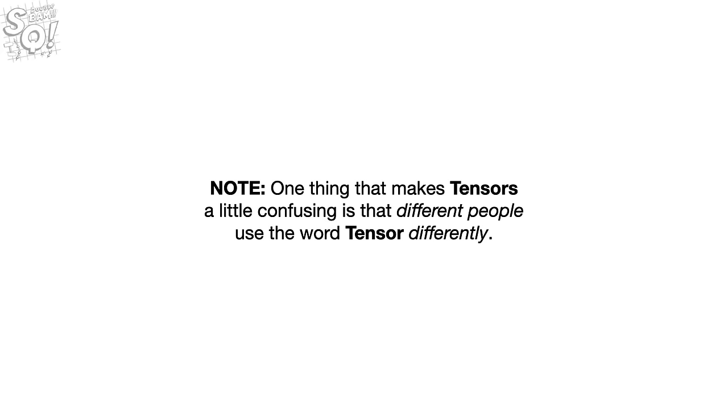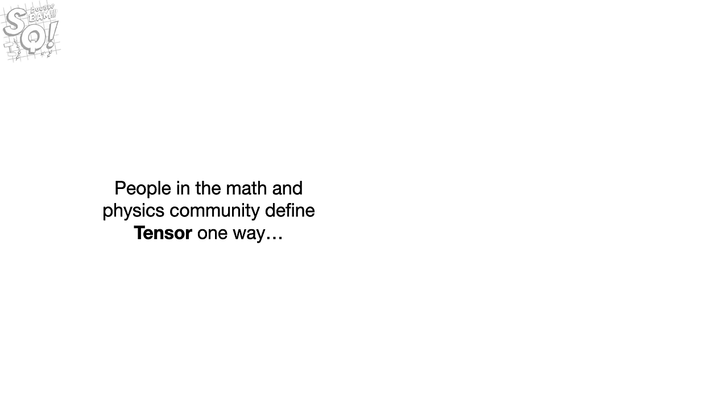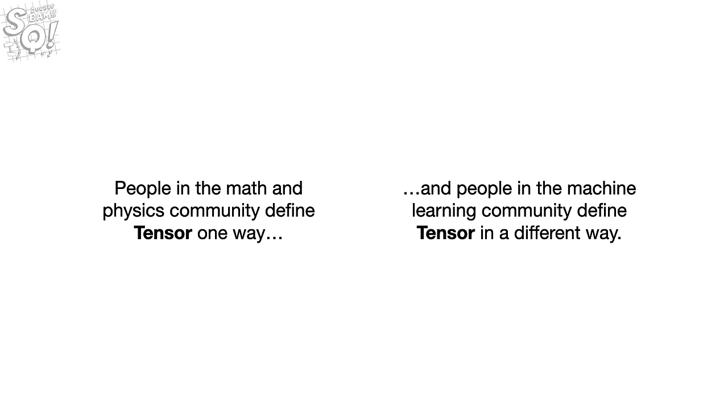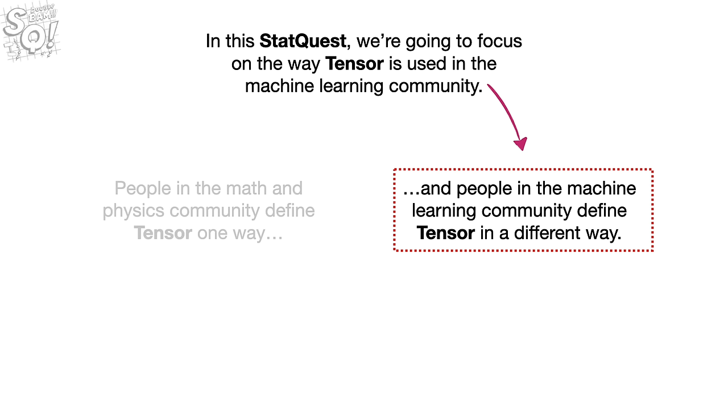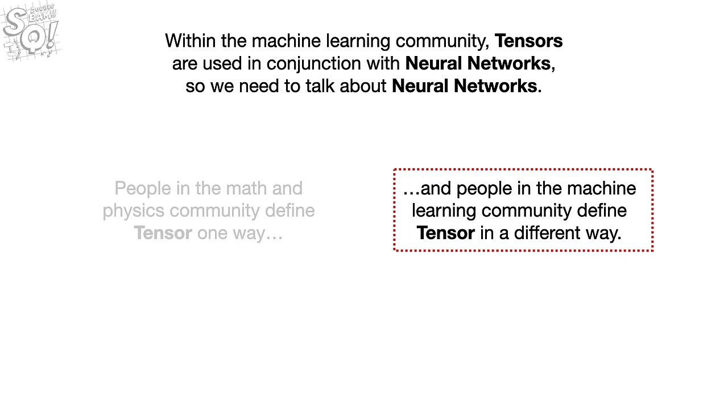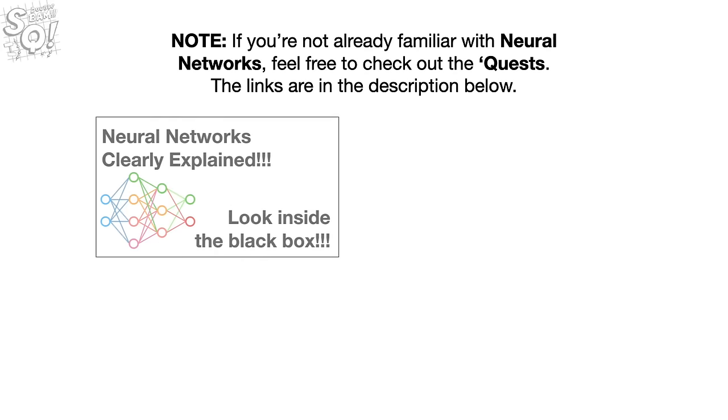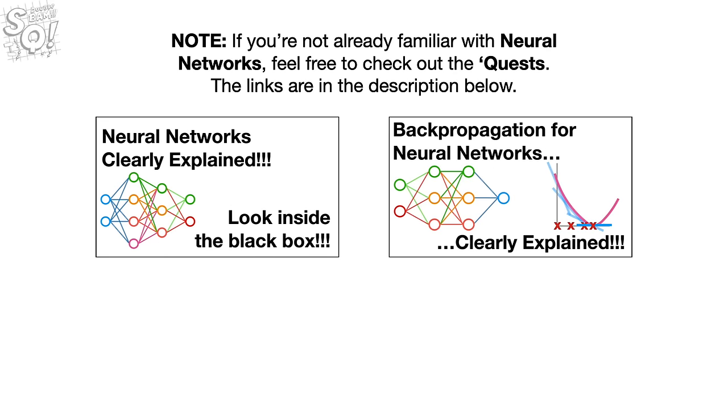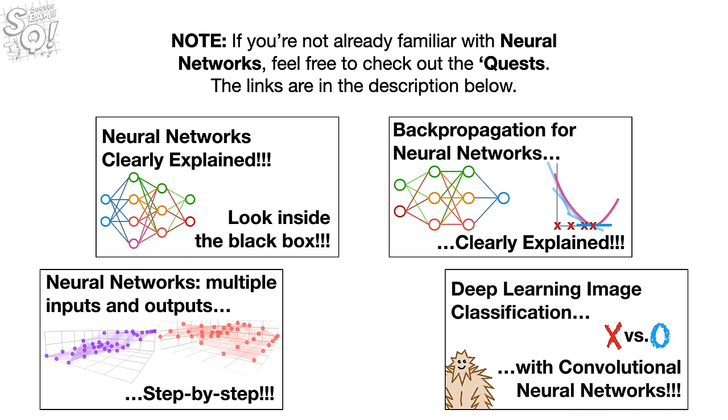Note, one thing that makes tensors a little confusing is that different people use the word tensor differently. People in the math and physics community define tensor one way, and people in the machine learning community define tensor a different way. In this StatQuest, we're going to focus on the way tensor is used in the machine learning community. Within the machine learning community, tensors are used in conjunction with neural networks, so we need to talk about neural networks. Note, if you're not already familiar with neural networks, feel free to check out the quests. The links are in the description below.